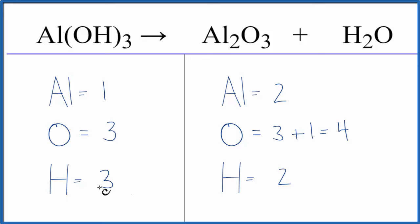When I have these odd numbers here, it's helpful if I can get those to be even numbers. So let's put a two in front of the aluminum hydroxide here. And this two, it applies to everything. So we have one aluminum times two. So now we have two aluminums.